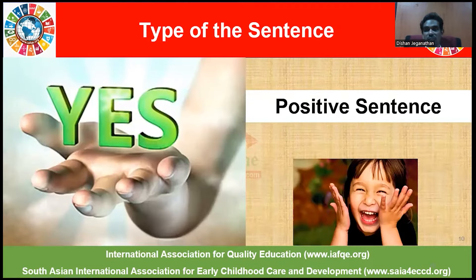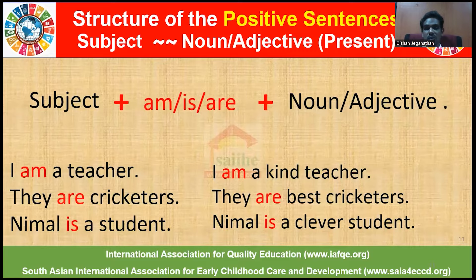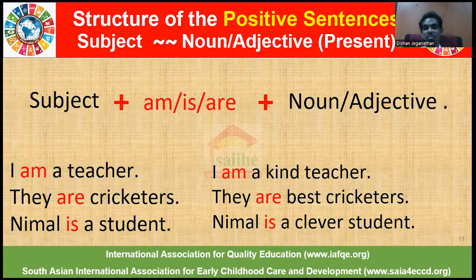Now we'll look into positive sentences. The structure of the positive sentence goes as subject plus am, is, or are, plus noun and adjective. For example: I am a teacher — here I refers to the subject plus am, and teacher is the noun. Now we could make use of an adjective to describe this sentence: I am a kind teacher — I is the subject, followed by am, and kind is the adjective, describing the quality of the teacher. Teacher is the noun. Likewise, they are cricketers; they are best cricketers. Nimal is a student; Nimal is a clever student.